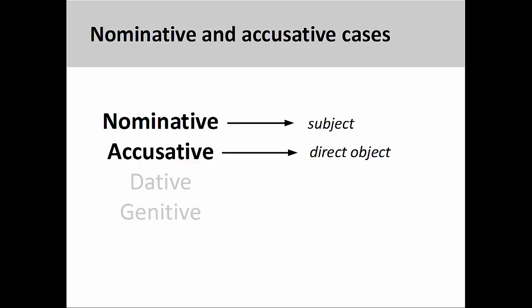The accusative case, among other things, is used in German to mark the direct object of a sentence. The direct object receives the action performed by the subject of the sentence, which is marked by the nominative case.